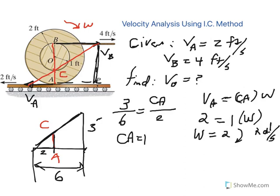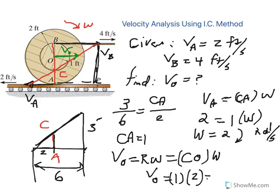Then finding velocity of O is very easy. Velocity of O is also the same proportion, so this would be velocity of O. You just have to connect to that line. So velocity of O in this case becomes also R omega. What is R? R is from C to O times omega. And since CO is also one foot, based on what we just calculated for CA, then velocity of O becomes one times two radians per second.